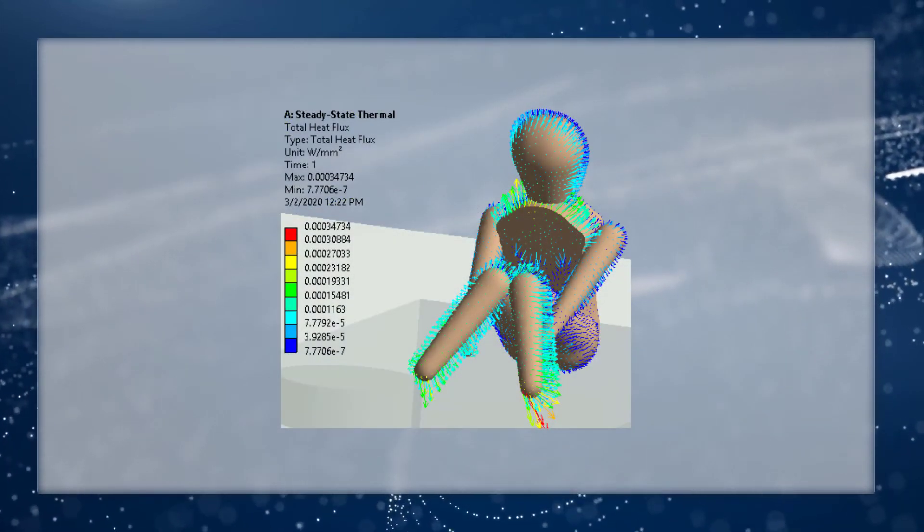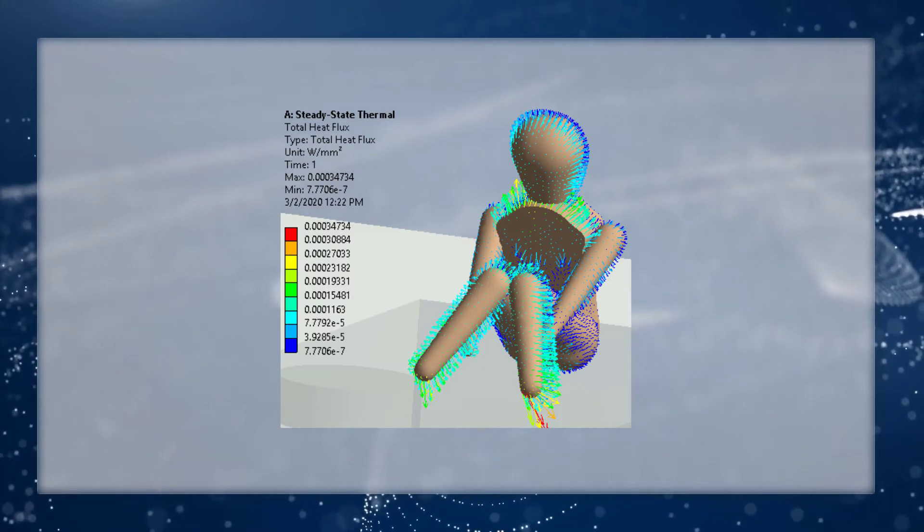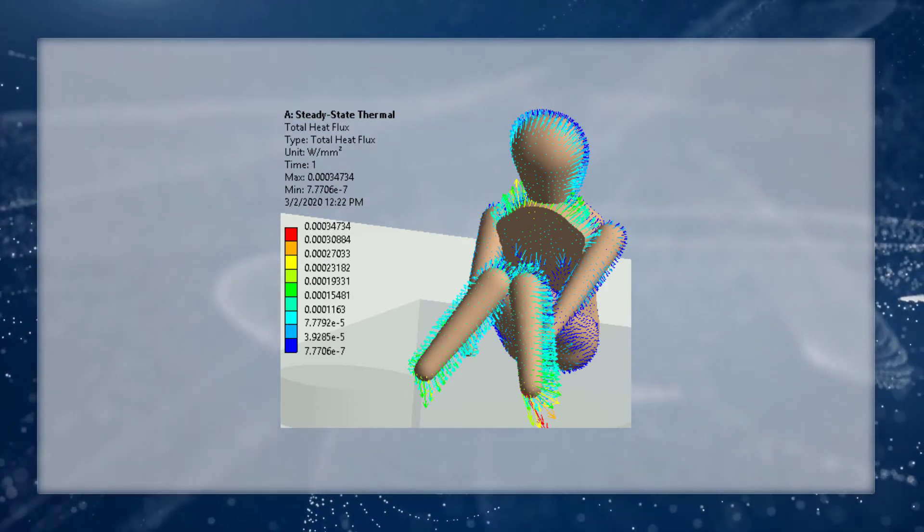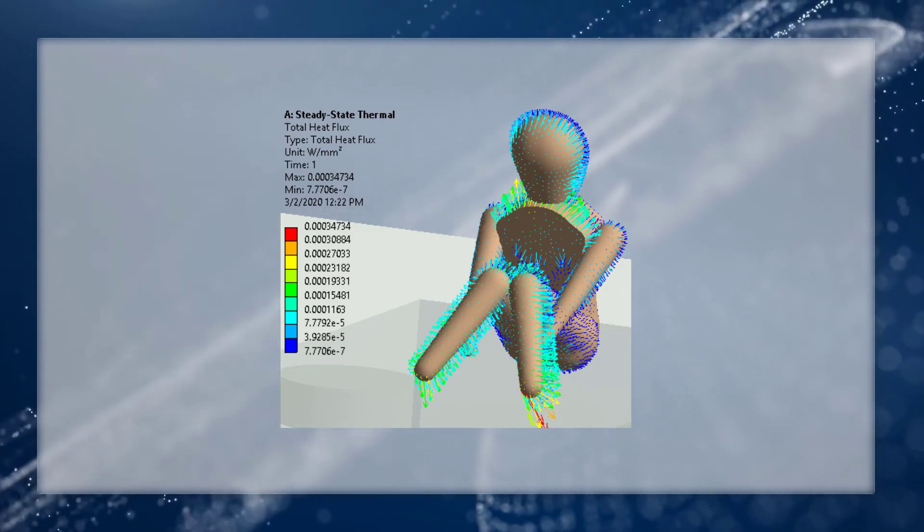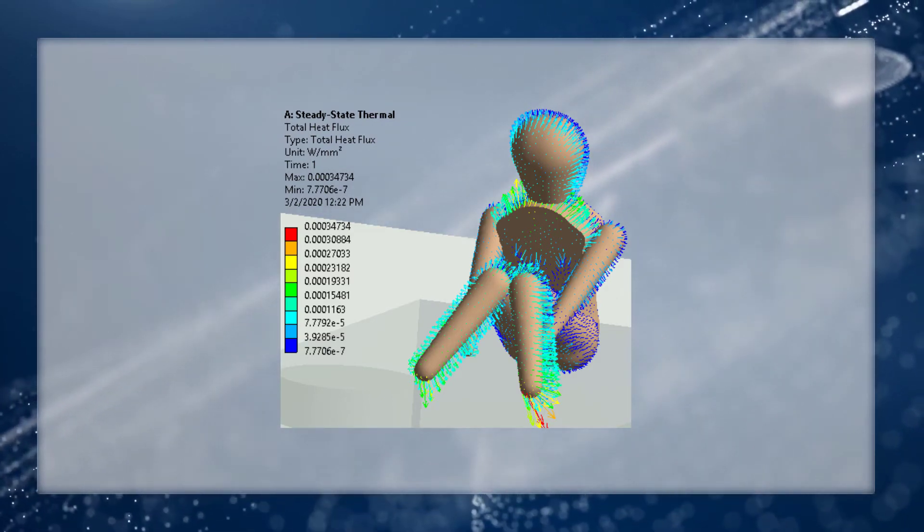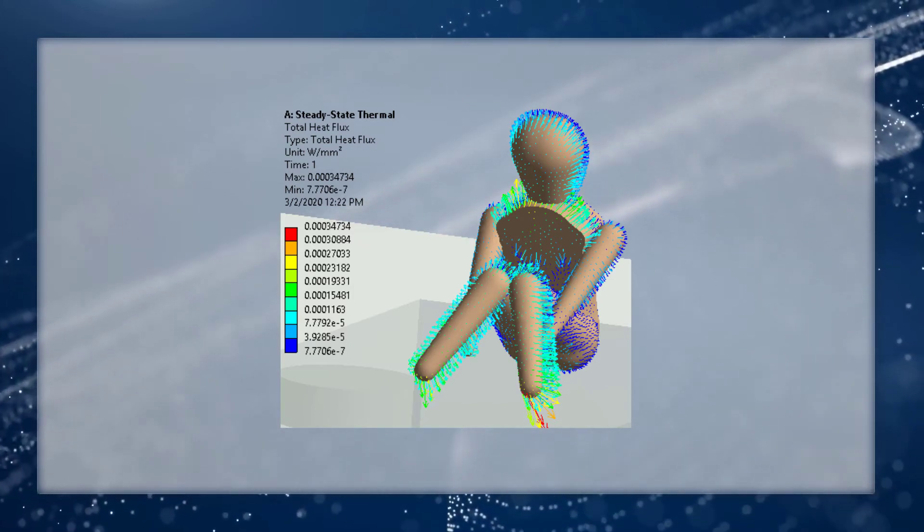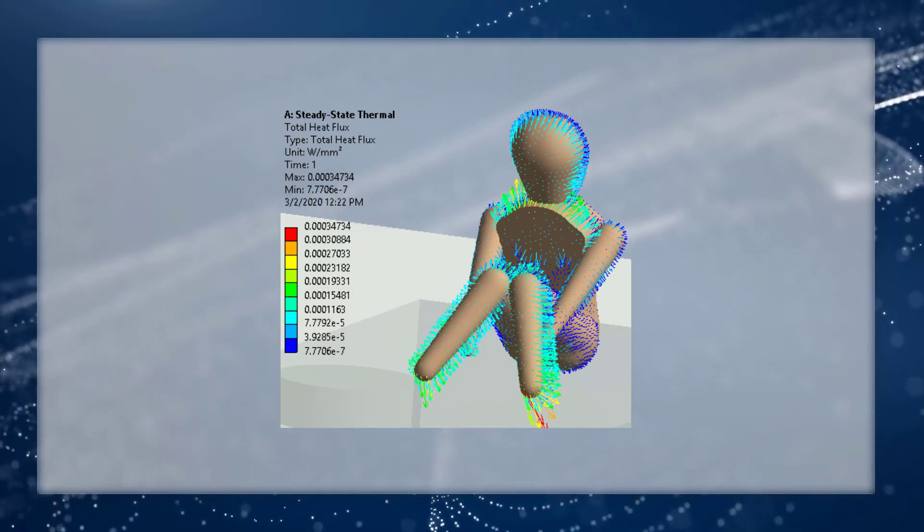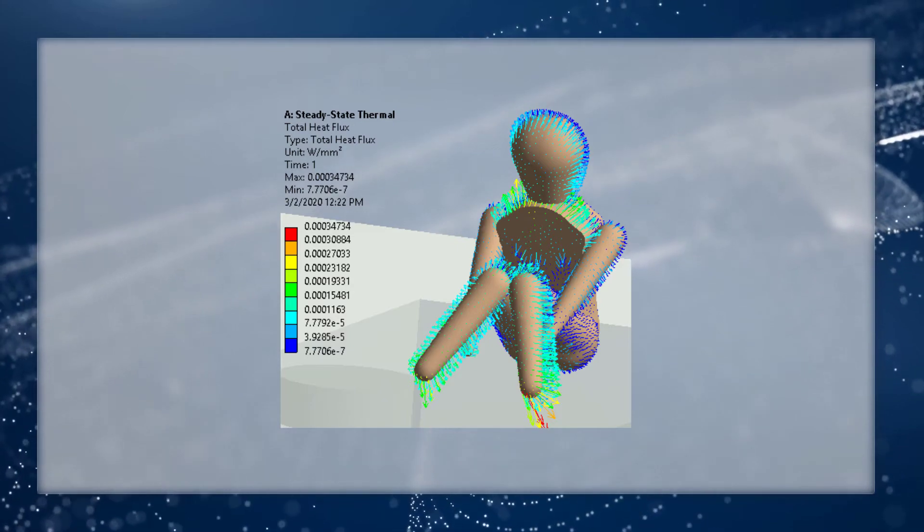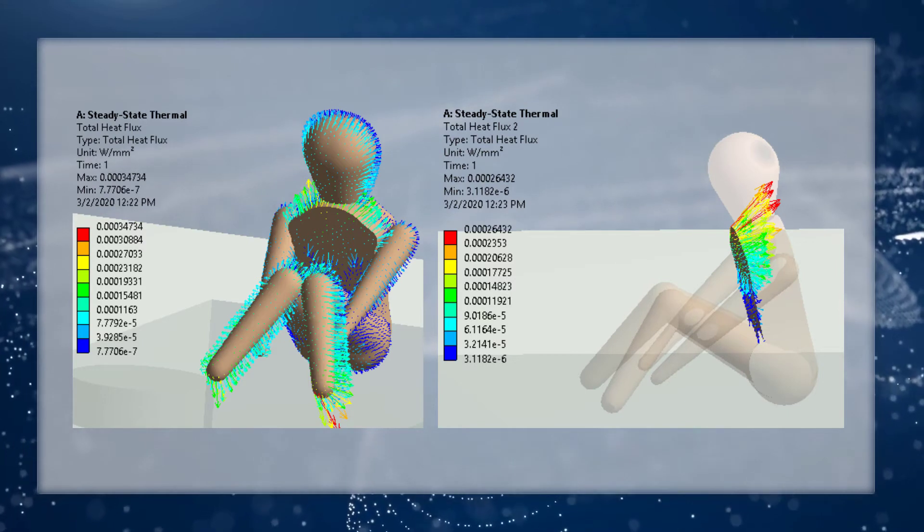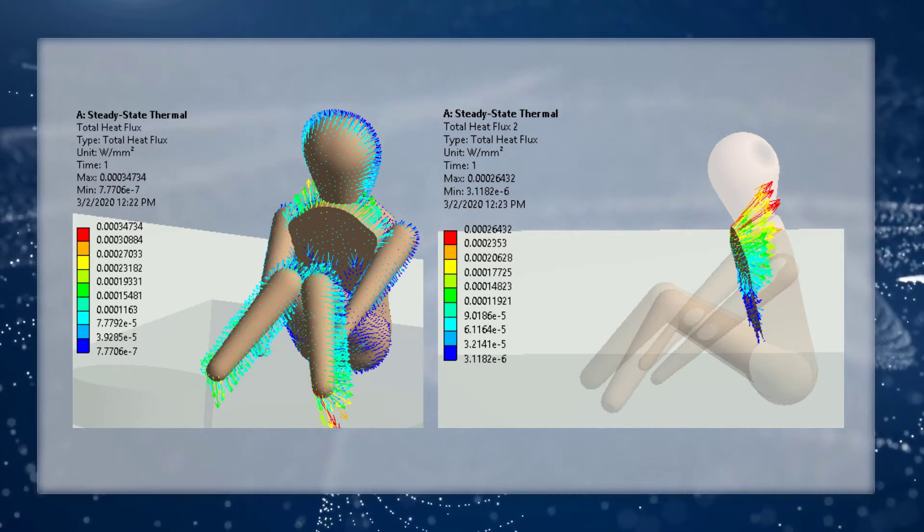Apart from temperature, we can also plot the total heat flux on the person. Since heat flux is a vector, like what we did before, we can turn on the vector plot and get a better idea of the heat flow direction. For the regions like the chest, where the vector arrow is pointing inside the solid body and cannot be seen, we can plot the heat flux on the surface only. And through this plot, it's obvious that heat flux is going into the human body.